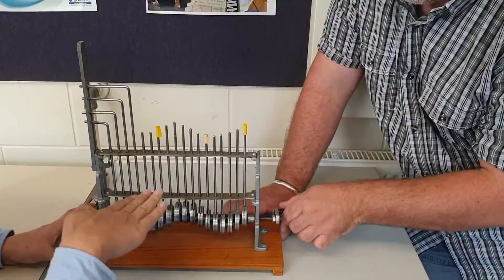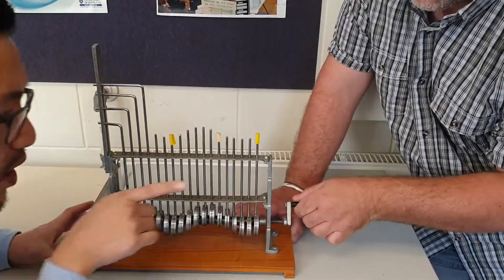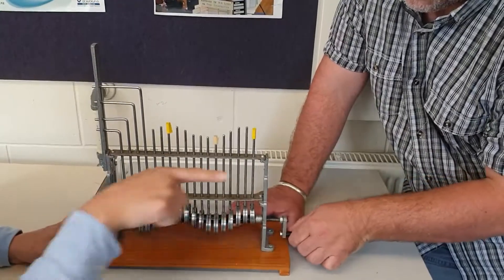This is what we call a transverse wave because the vibration is up and down while the wave travels horizontally. They're perpendicular to each other.